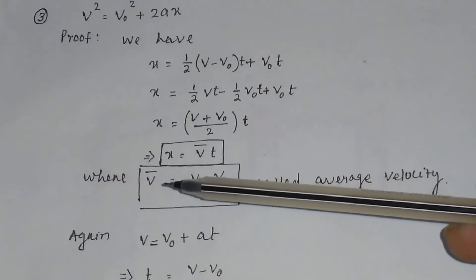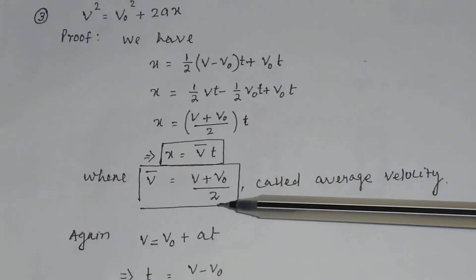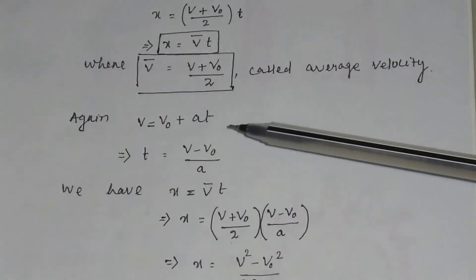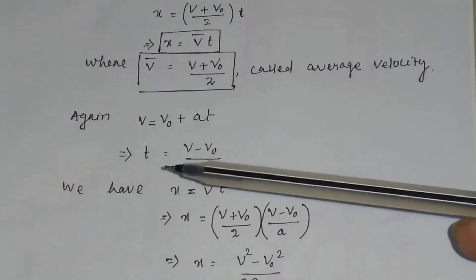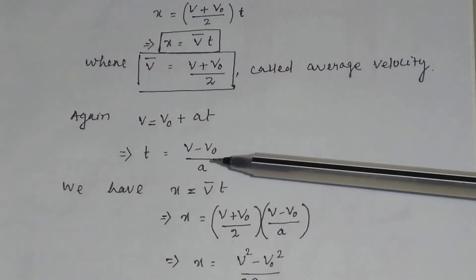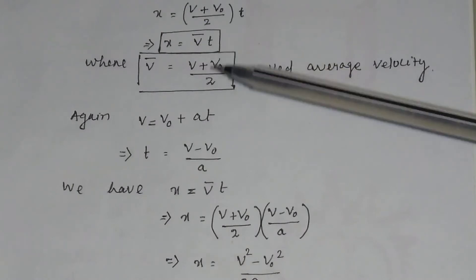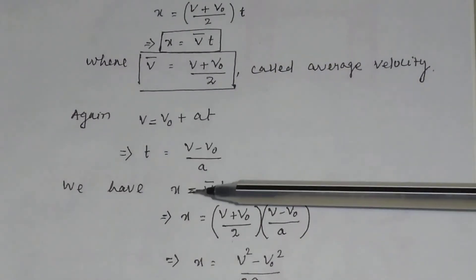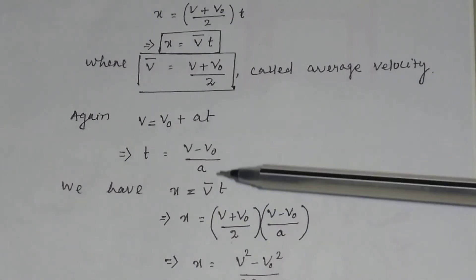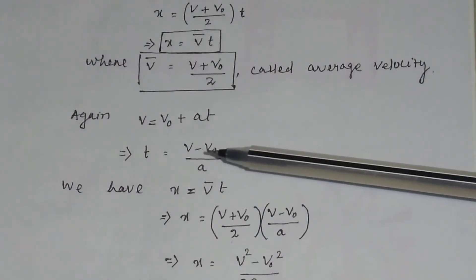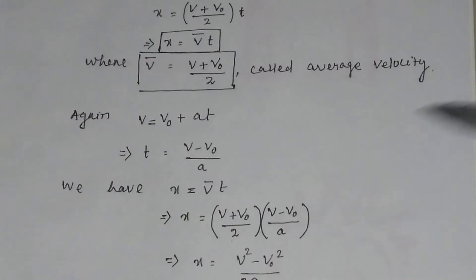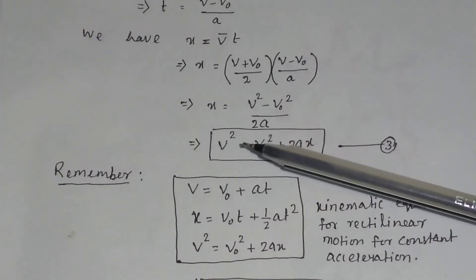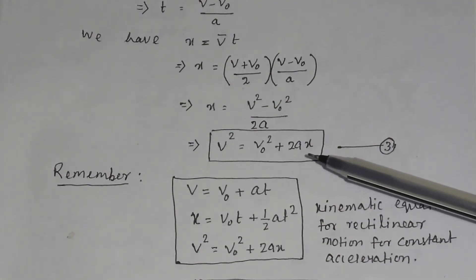You also have to remember that average velocity equals (v plus v0) divided by 2, that is final velocity plus initial velocity divided by 2. We have the relation v equals v0 plus a·t, so t equals (v minus v0) divided by a. Substituting into x equals v_average times t, with v_average equals (v plus v0)/2 and t equals (v minus v0)/a, we get x equals (v + v0)(v - v0) divided by 2a, which equals (v² - v0²) divided by 2a. By cross multiplication, v² equals v0² plus 2a·x. This is the third equation of motion.